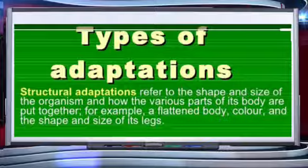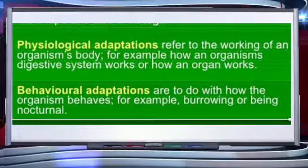Now let's talk about types of adaptations. Number one: structural adaptations. It refers to the shape and size of the organism and how the various parts of its body are put together. For example, a flattened body, color of the body — mimicry is the best example to understand body color. The size and shape of the legs of some organisms are also good examples of structural adaptations.